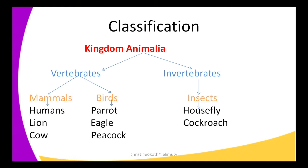Going down, these animals are still subdivided. Some of them we classify under vertebrates and some under invertebrates. Vertebrates are animals which have a backbone, and invertebrates are animals that do not have the backbone. In my list of organisms, under vertebrates we find humans, lions, cow, parrots, eagle, and peacock.